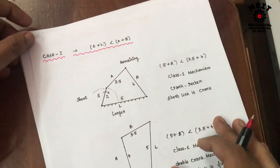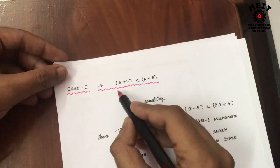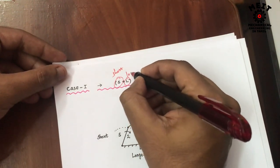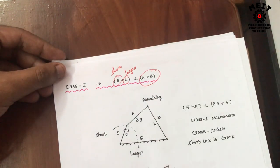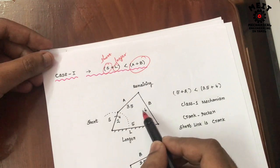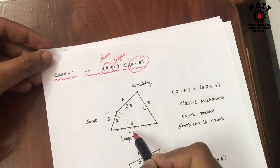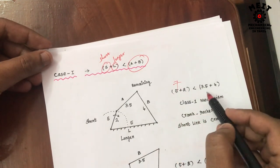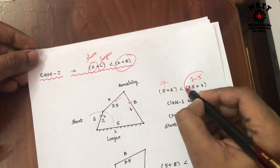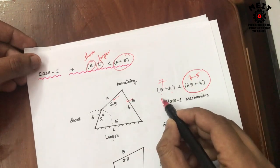We can classify the mechanism based on the length of particular links. In Case 1, s plus l is less than p plus q, where s is the shortest link, l is the longest link, and the other two are the remaining links. For example, with links of length 2, 5, 4, and 3.5: the shortest is 2 and longest is 5, so 2 plus 5 equals 7, which is less than 4 plus 3.5 equals 7.5. This is a Class 1 mechanism.